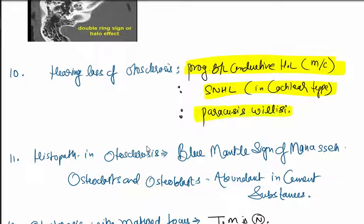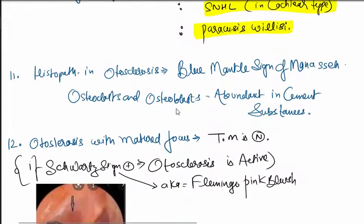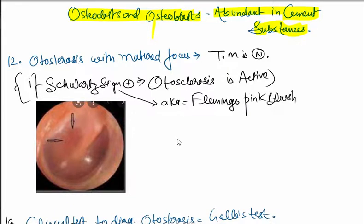Histopathology in otosclerosis shows blue mantle sign of Manasse. It is due to osteoclasts and osteoblasts - they are abundant in cement substances. Osteoclasts and osteoblasts are shown more abundant in cement substance. Histopathology uses hematoxylin and eosin staining.